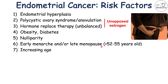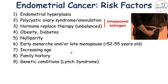Increasing age is also a risk factor for endometrial cancer. Family history is another risk factor — if there's a family history of endometrial cancer, you're more likely to also have it, as there may be a genetic predisposition. Genetic conditions like Lynch syndrome, also known as hereditary nonpolyposis colorectal cancer, involve mutated DNA mismatch repair proteins. This increases the risk of not only endometrial cancer but also other cancers, making it a familial cancer syndrome — including increased risk of colon cancer.